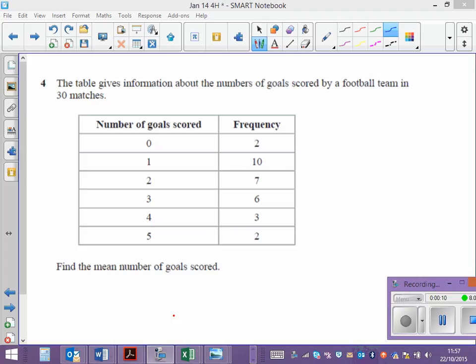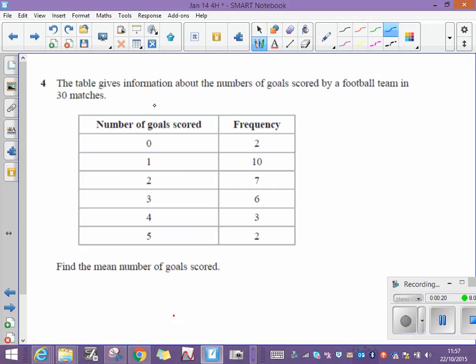two games, or two matches in which no goals were scored, ten matches in which one goal was scored. We have to work out the total number of goals scored. And to do that, we multiply this first column, which I call the X column, by the frequency.